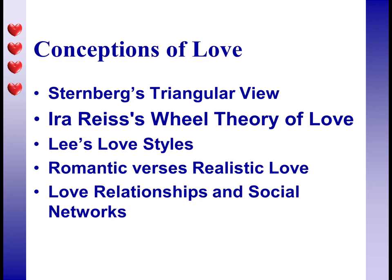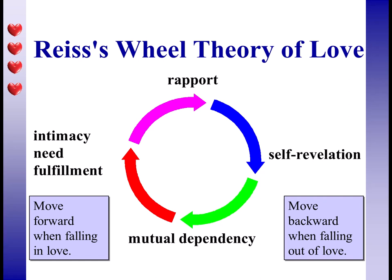The wheel theory of love is kind of interesting. It says that love has four stages as it develops, and that you move through those stages when you're falling in love. When you're falling out of love, you do the same thing but move backward. So you start with rapport — you kind of like each other and you want to see where it's going to go — and then you move on to self-revelation.